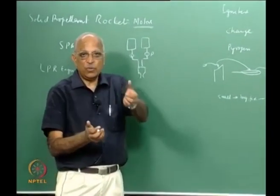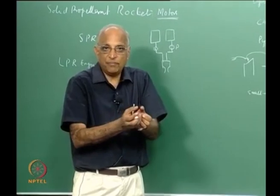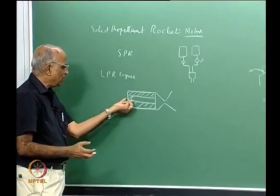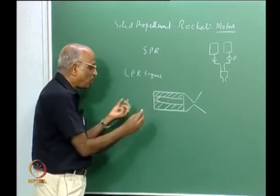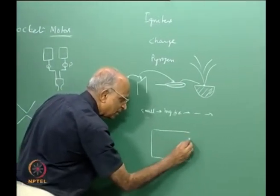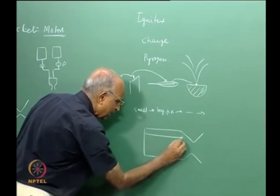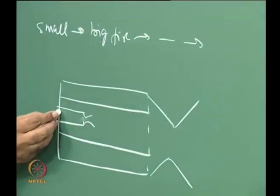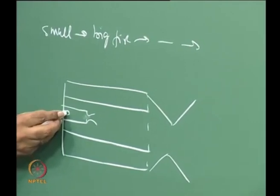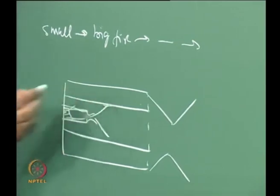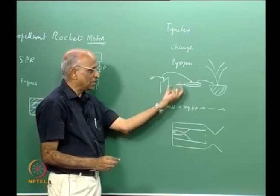In solid propellant rockets, we sometimes use a small rocket motor as the igniter — a pyrogen. This small rocket motor has its own nozzle, case, and igniter containing a squib. A small fire makes a bigger fire, which makes a still bigger fire, which ignites the pyrogen, which then generates the hot gases to ignite your main rocket. Therefore, a pyrogen is a small rocket which ignites your main rocket.